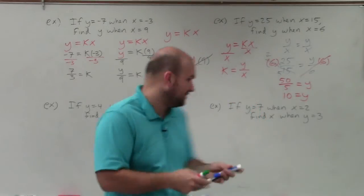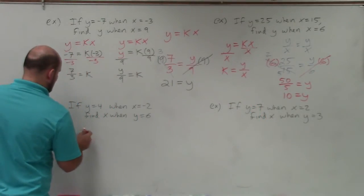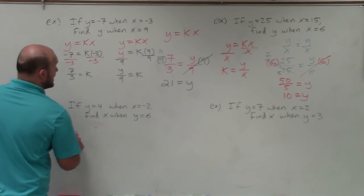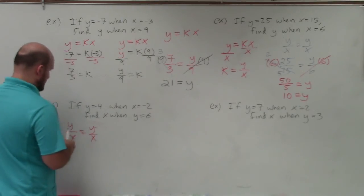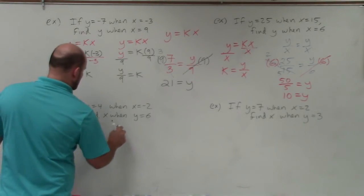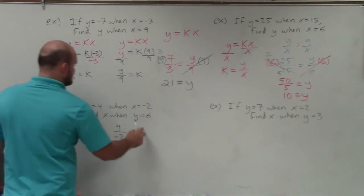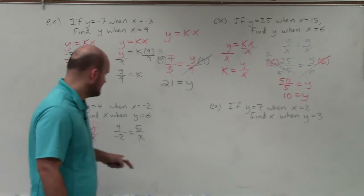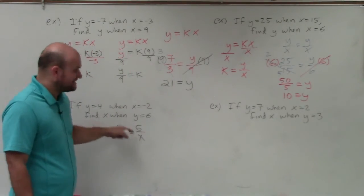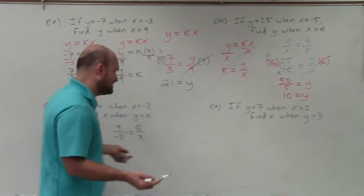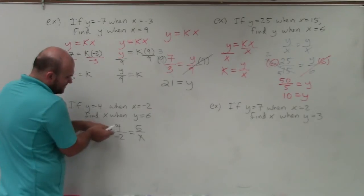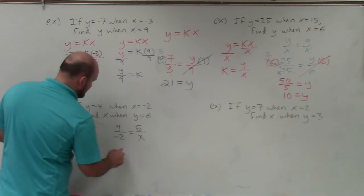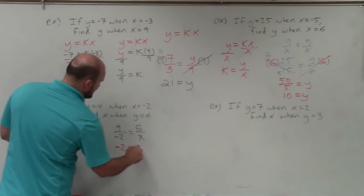Remember, y over x equals y over x. So let's plug in the information. I have 4 over negative 2 equals 6 over x. This one becomes more difficult because my variable is in the denominator, so I can't just simply multiply. There's a couple different ways to do this. Any time you have something you can reduce, reduce it. 4 divides into negative 2, or negative 2 divides into 4. Negative 2 equals 6 over x.